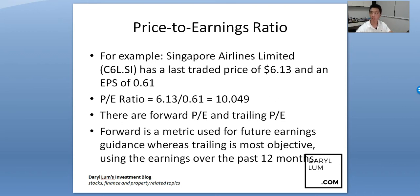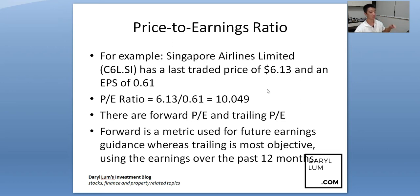If you look up SIA, you'll see a PE ratio of 10.049 — but what does that mean on its own? It doesn't mean anything because you have no metric to compare it to. So normally what you do is open up SIA with a PE ratio of about 10, then open up DBS with a PE ratio of about 7.8. All things else being equal, DBS would be considered a cheaper stock compared to SIA.